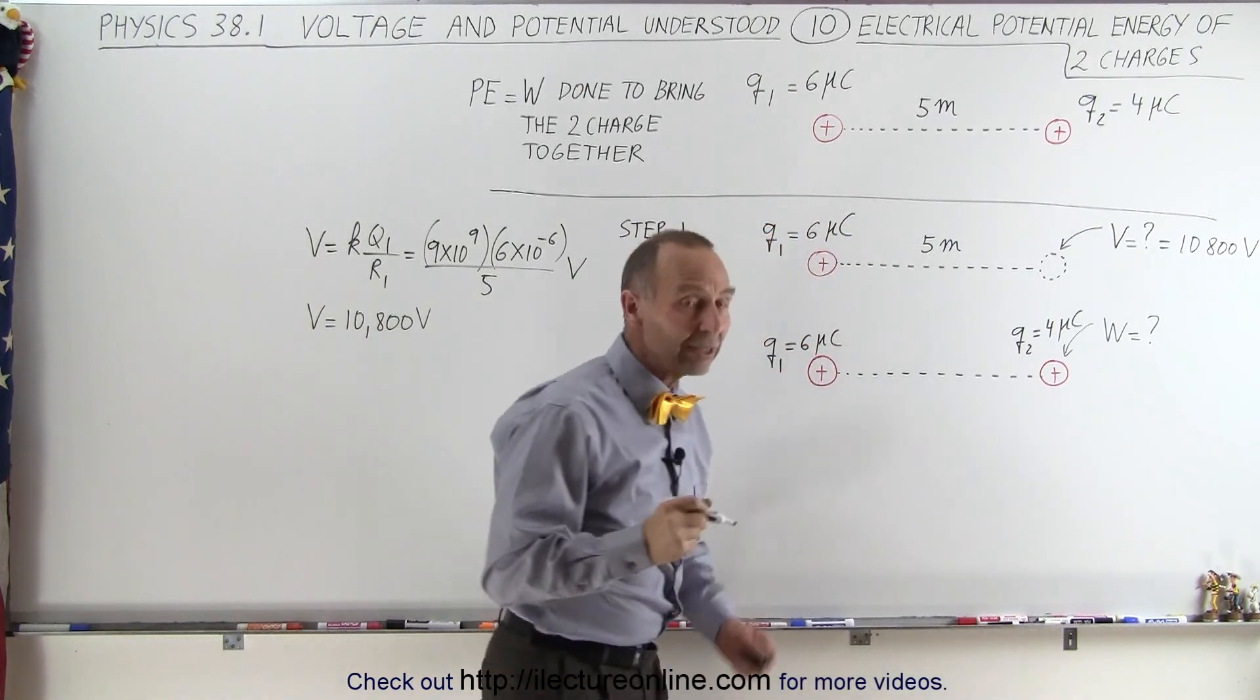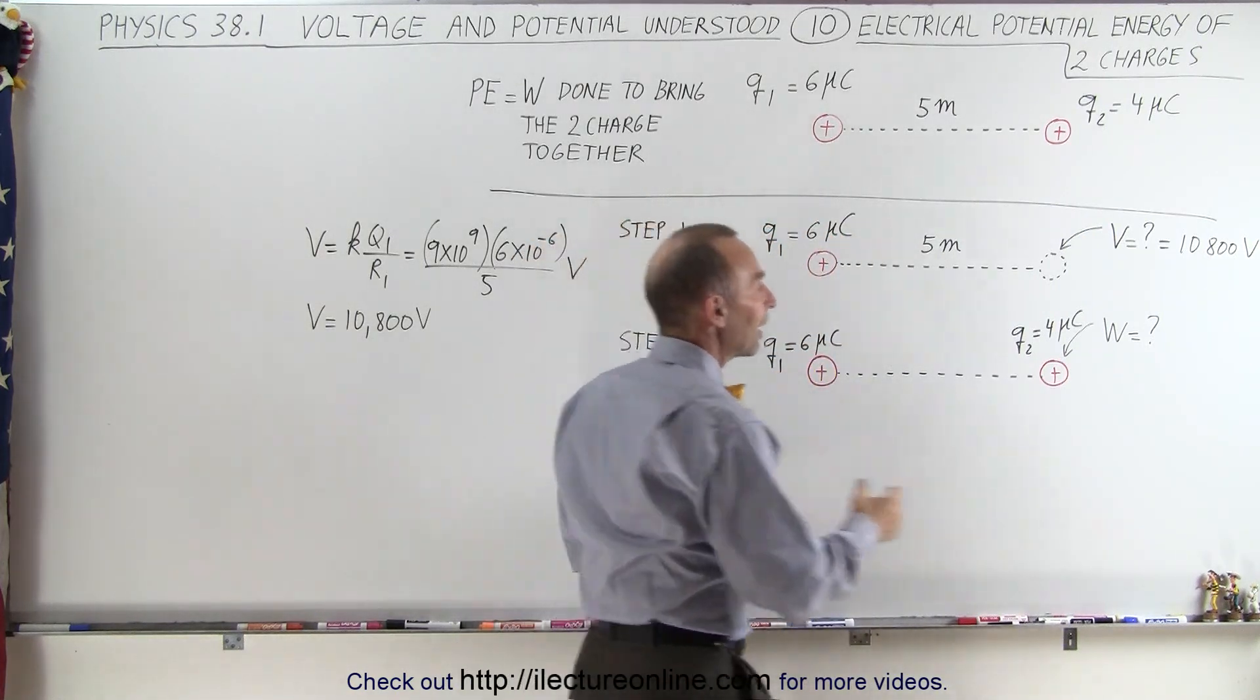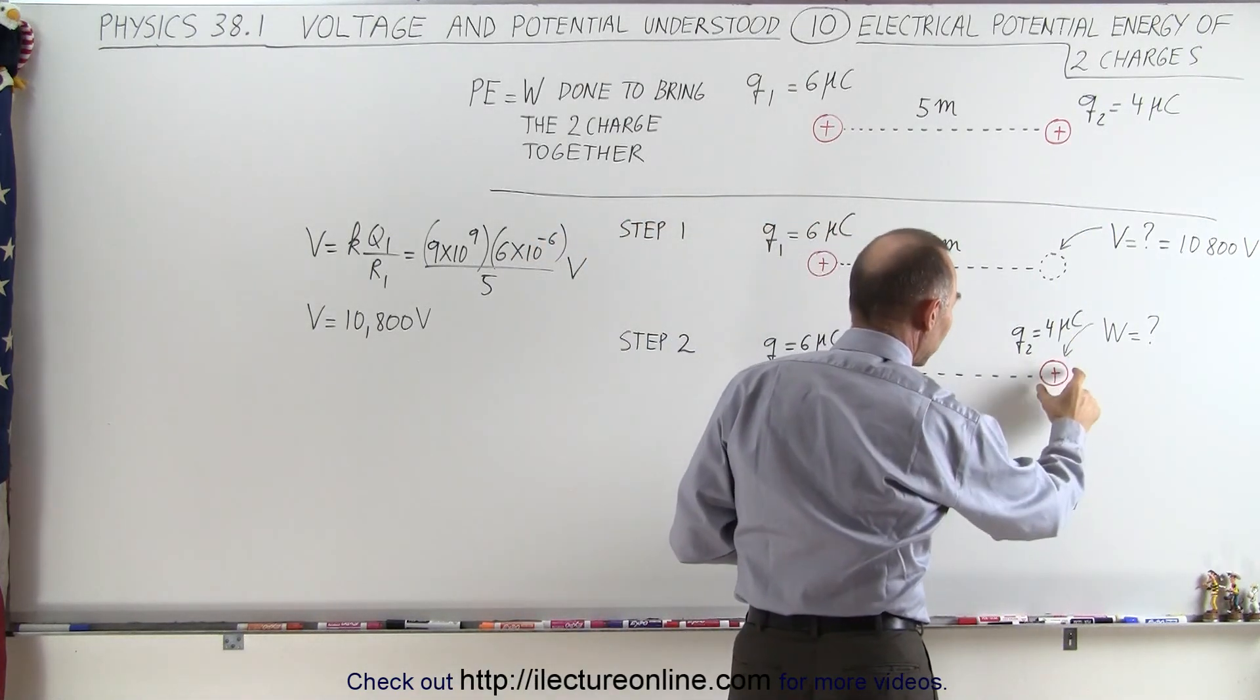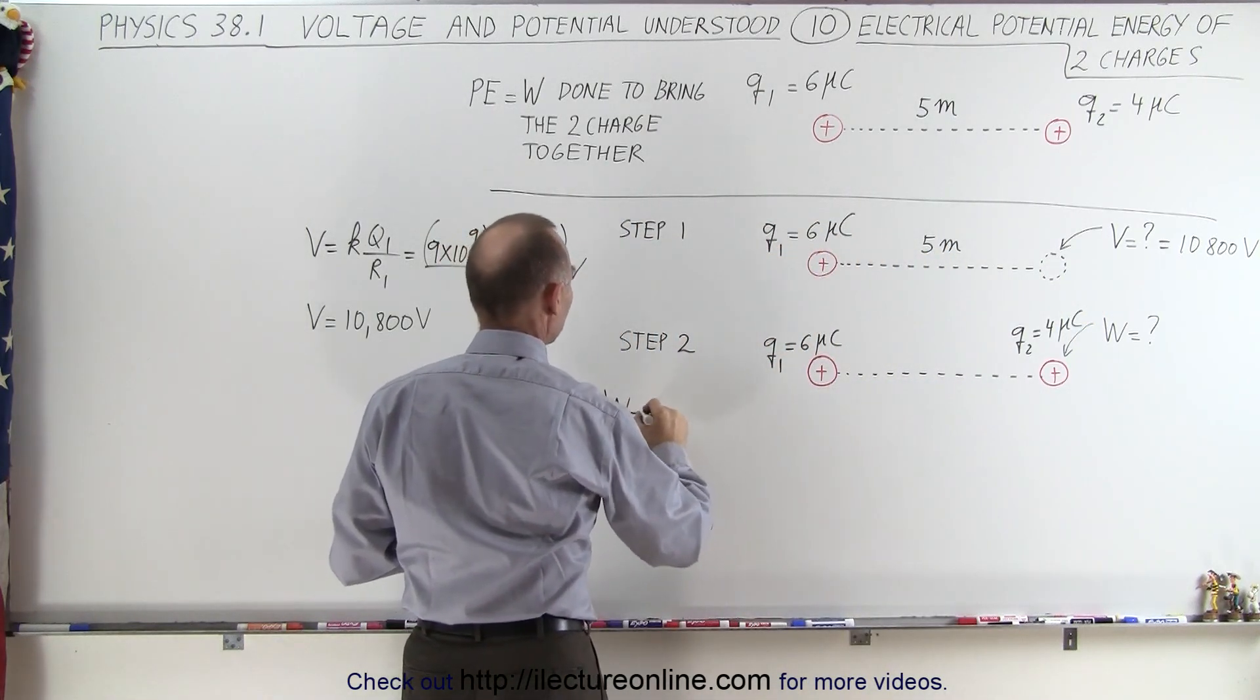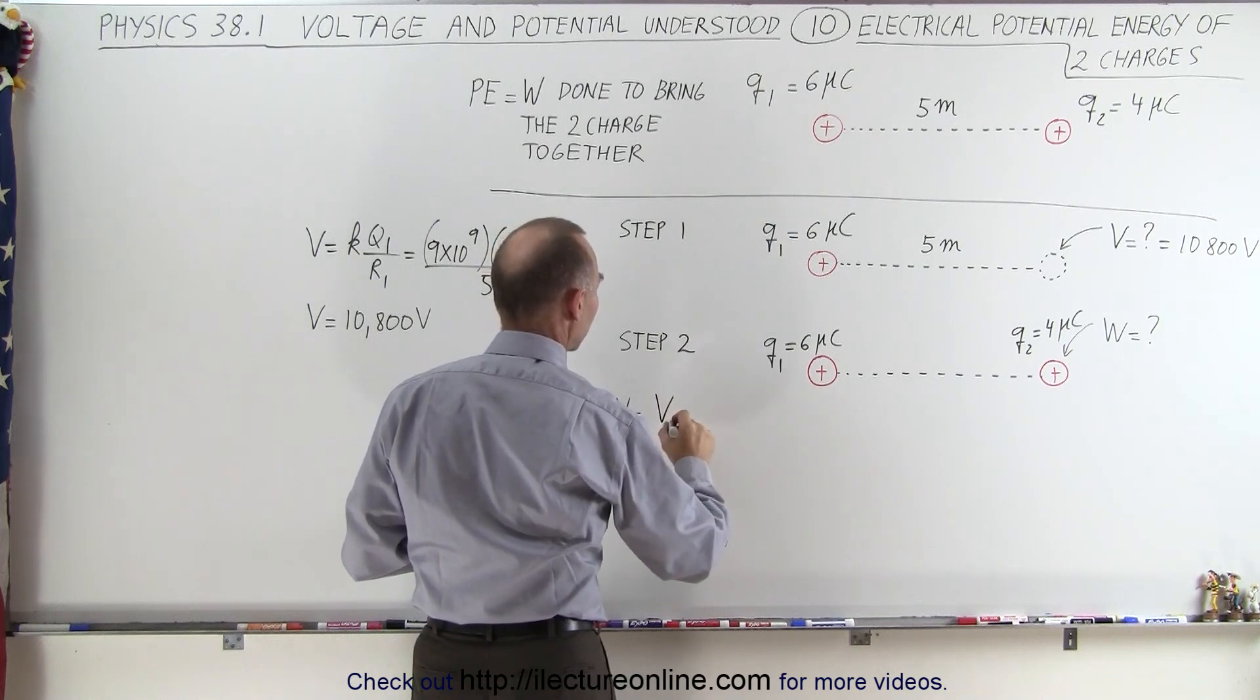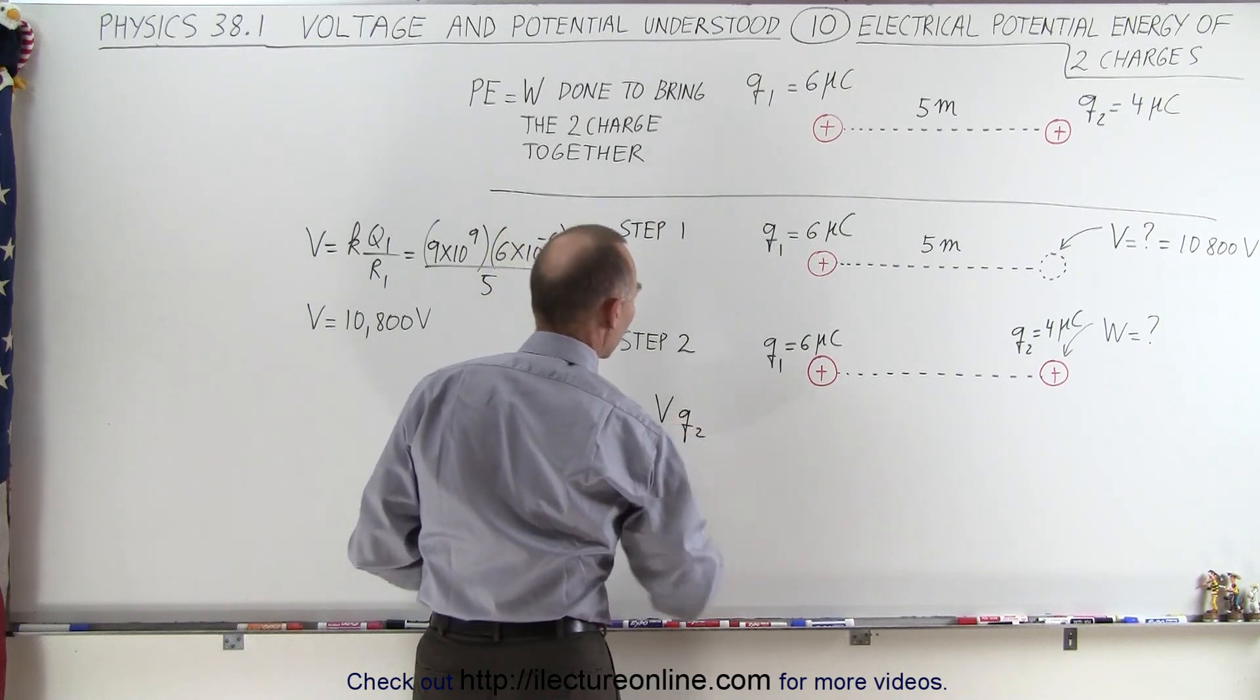Now what we're going to do is calculate the work it's going to take to put the second charge at that location where the potential is this. And what we can do there is say that the work is equal to the potential of that location times the charge you're going to place there.